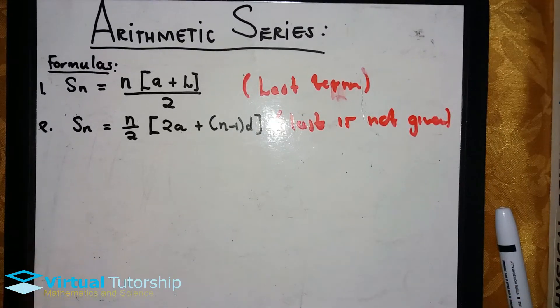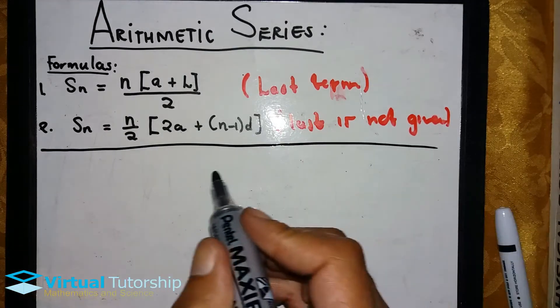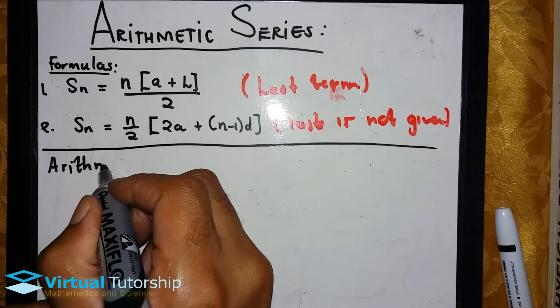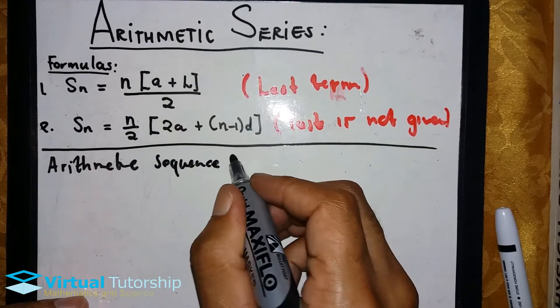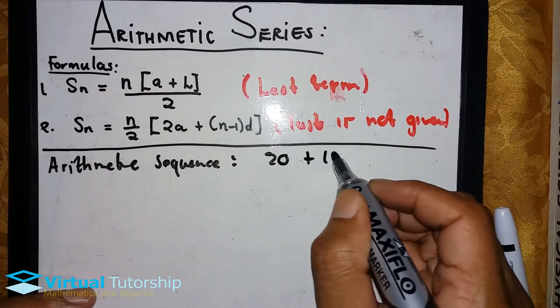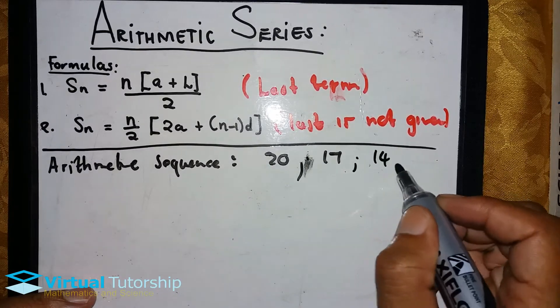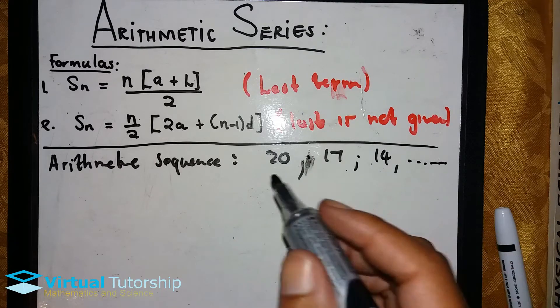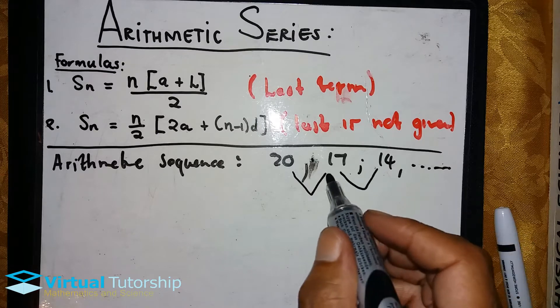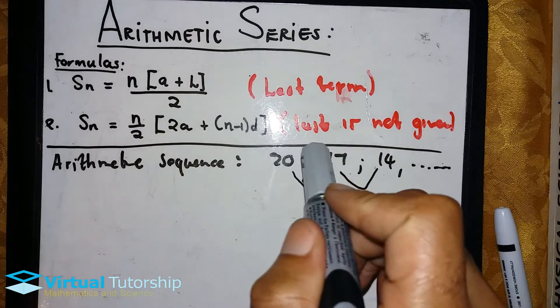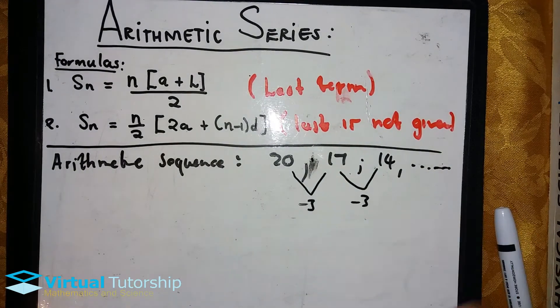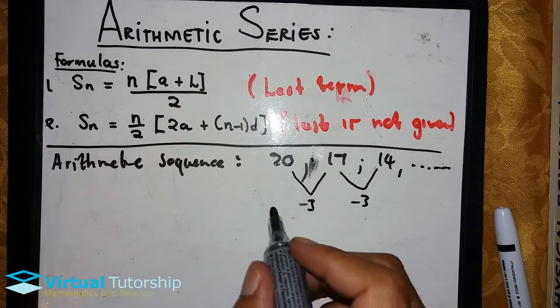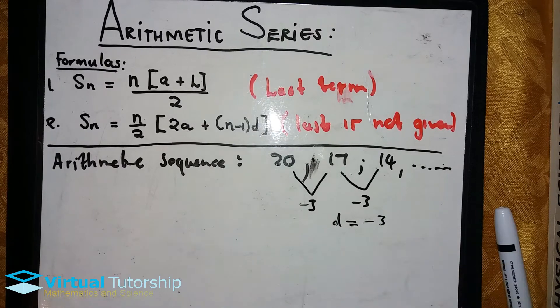Okay, an arithmetic series. Before we discuss arithmetic series, let's discuss the arithmetic sequence. An arithmetic sequence would be, for example, 20, 17, 14, all the way to infinity. So this is an example of an arithmetic sequence. When you subtract each term, you get a difference of three. The common difference d is equal to negative three. This is an arithmetic sequence because there's a common difference.